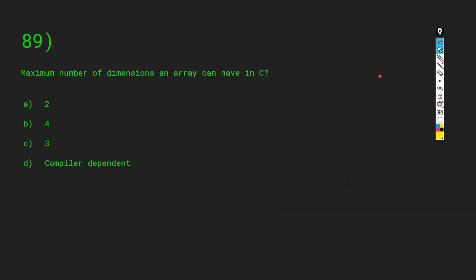What is the maximum number of dimensions an array can have in C? Options: A) 2, B) 4, C) 3, D) compiler dependent. When it comes to array dimensions in C, we do not actually have a fixed limit — it depends on the compiler. So the answer is D: it is compiler dependent.